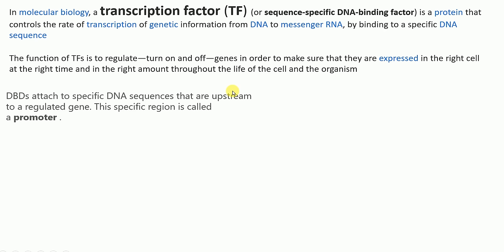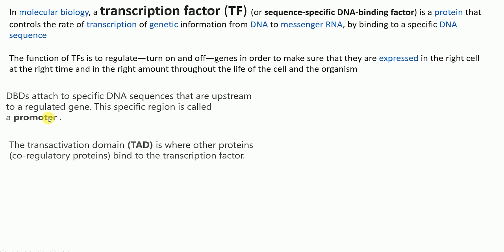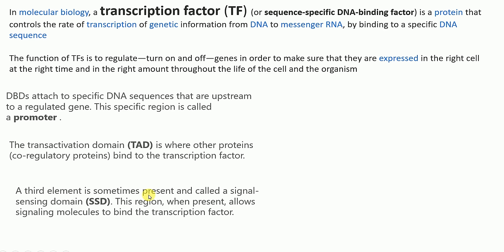I'm going to talk about the schematic structure of transcription factors. Basically, it has mainly two domains. One is the DNA binding domain — the DNA binding domain attaches to specific DNA sequences upstream of the regulated gene, which is the promoter region. The other is the transactivation domain, where other co-regulatory proteins bind to the transcription factor. There is also a third optional element called the signal sensing domain, which when present allows signaling molecules to bind to the transcription factor.